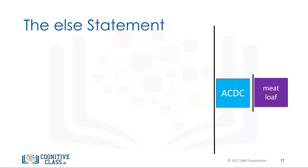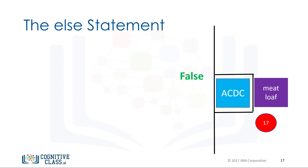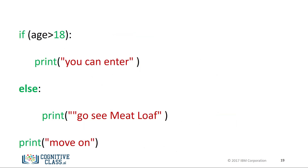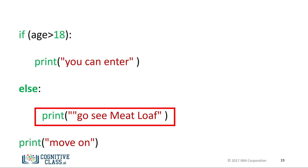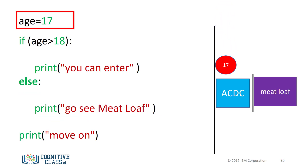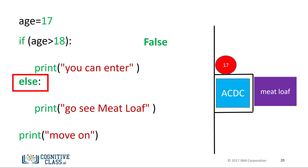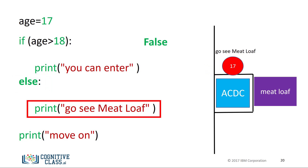The else statement will run a different block of code if the same condition is false. Let's use the ACDC concert analogy again. If the user is 17, they cannot go to the ACDC concert, but they can go to the meatloaf concert, represented by the purple square. If the individual is 19, the condition is true and they can enter the ACDC concert, then move on as before. The syntax of the else statement is similar — we simply append the statement else, then add the expression we would like to execute with an indent. For the case where the age is 17, we set age to 17, check the if statement, and since the statement is false, we progress to the else statement and run the indented statement — corresponding to the individual attending the meatloaf concert.